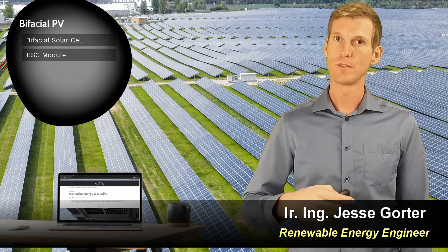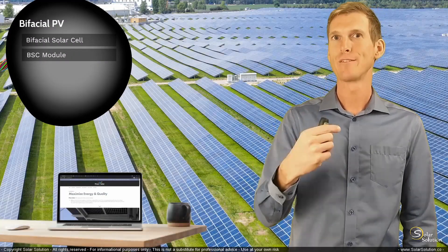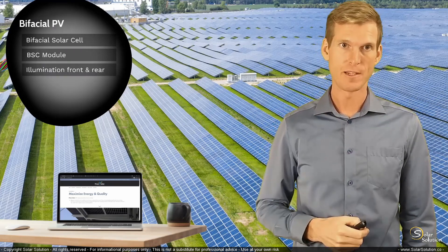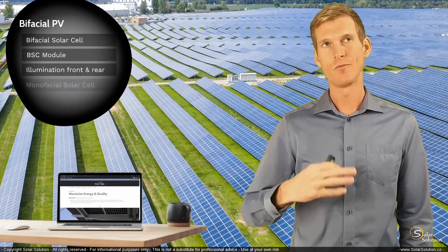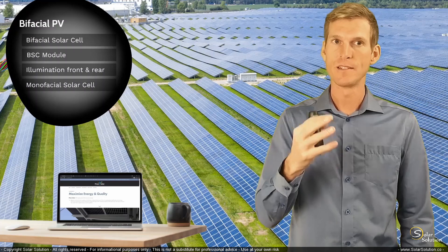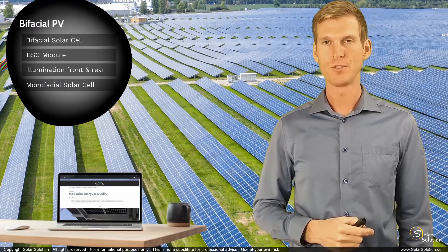Now the whole trick of a bifacial photovoltaic module is that you can illuminate it from both the front and from the rear. It's not magic there. And the opposite of a bifacial module is a monofacial solar cell. So the regular photovoltaic module that you often come across is monofacial, and the variation is a bifacial PV module.